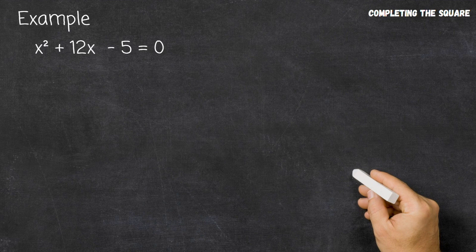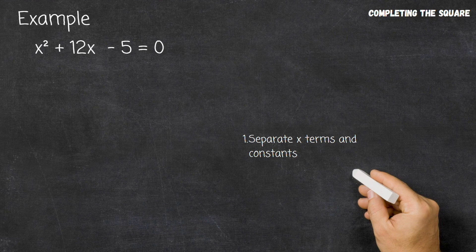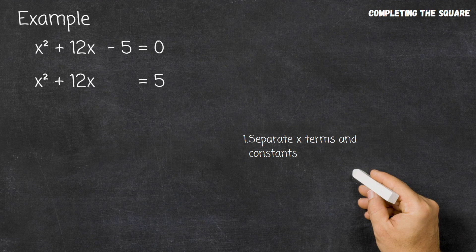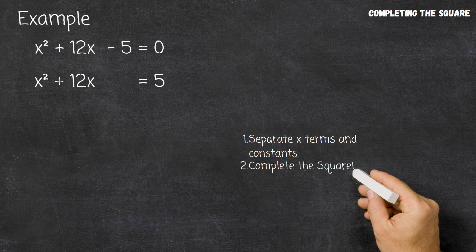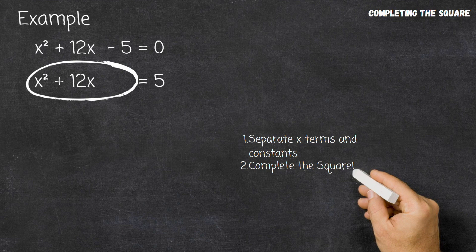The first thing we need to do is separate the x terms and the constants. This is the straightforward method of completing the square, and I will explain why it works in just one second. So we go ahead and separate the x terms from the constant terms. To do that, we add 5 on both sides, giving us x squared plus 12x equals 5. The next thing we need to do is try to imagine these terms as an incomplete square — remember, we're completing the square.